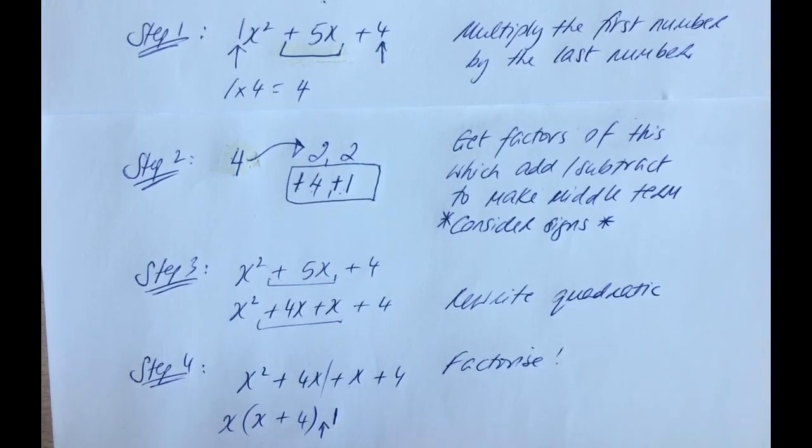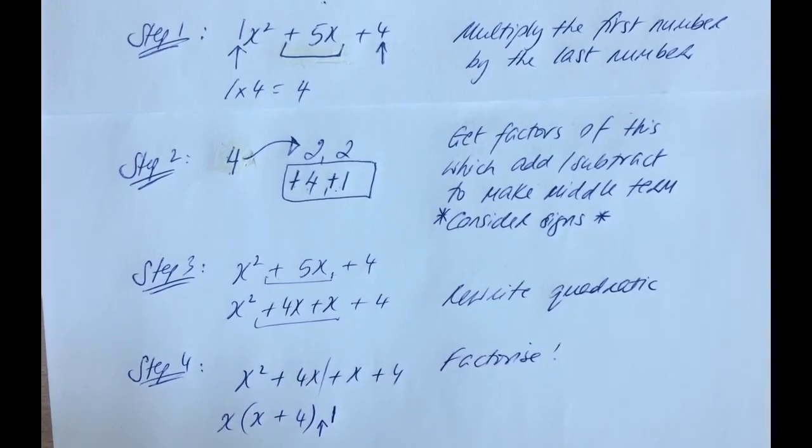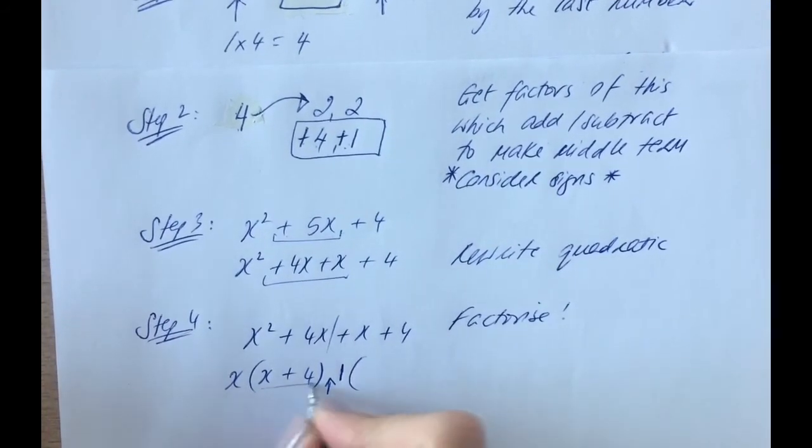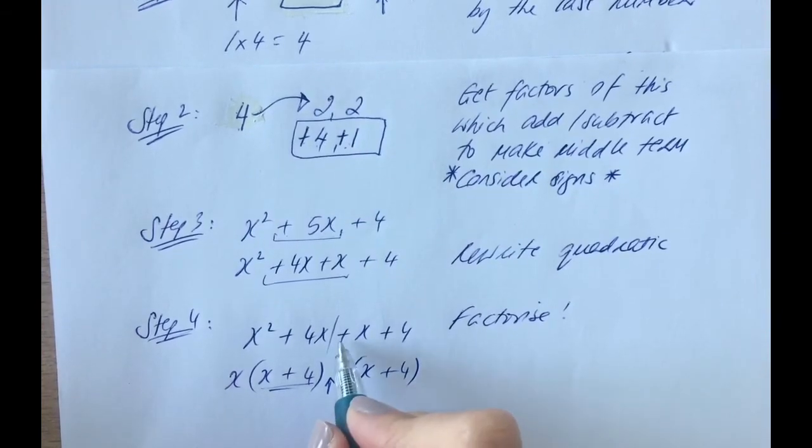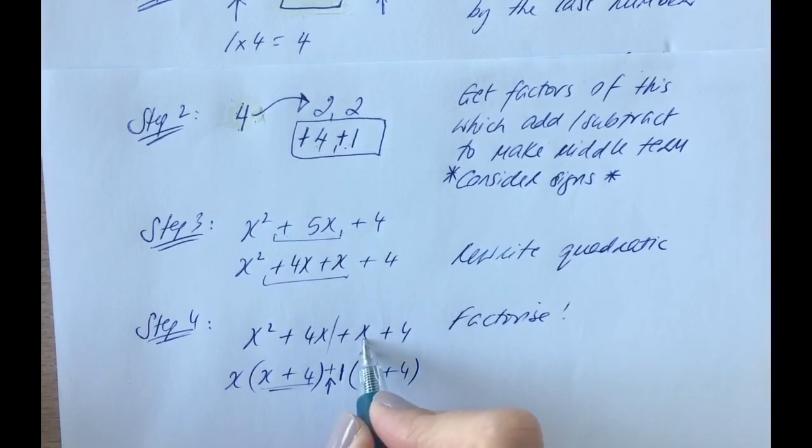So, again, leave that sign till the end, and what we'll do is we will open up our bracket. We know it's got to be the same here, x plus 4, and of course, what will work? It's all positive, so this one's quite easy. Plus 1 times x is 1x, and plus 1 times 4 is, of course, 4.